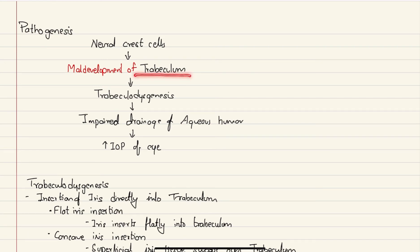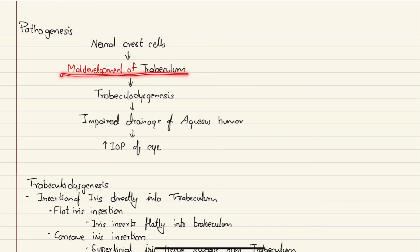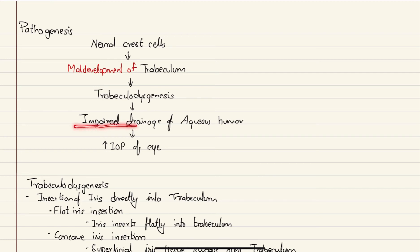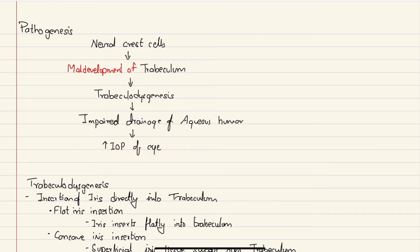Regarding pathogenesis of congenital glaucoma: the trabeculum is the structure responsible for drainage of aqueous humor, and it develops from neural crest cells. When there is maldevelopment of the trabeculum, this is called trabecular dysgenesis. Trabecular dysgenesis leads to impaired drainage of aqueous humor, resulting in increased intraocular pressure.